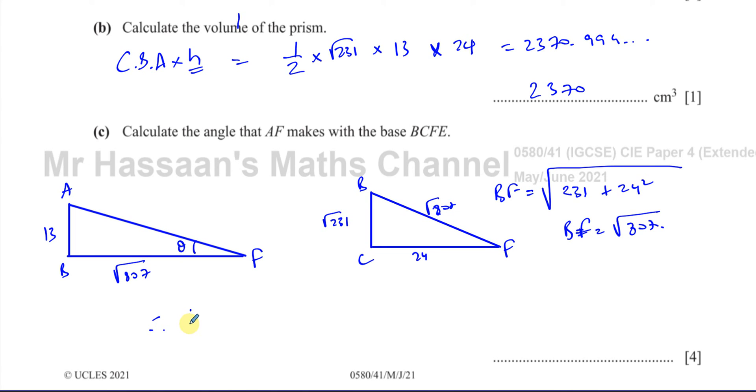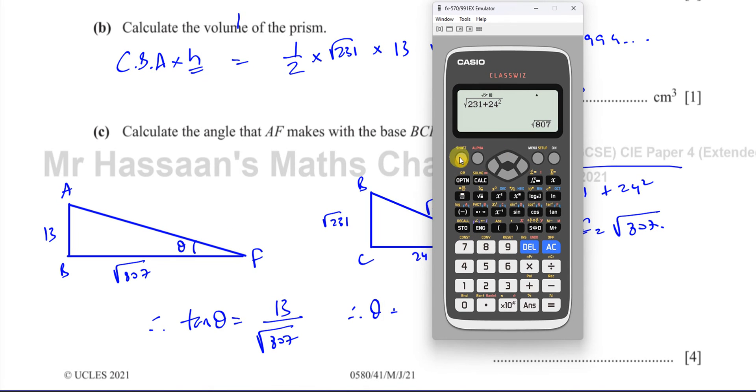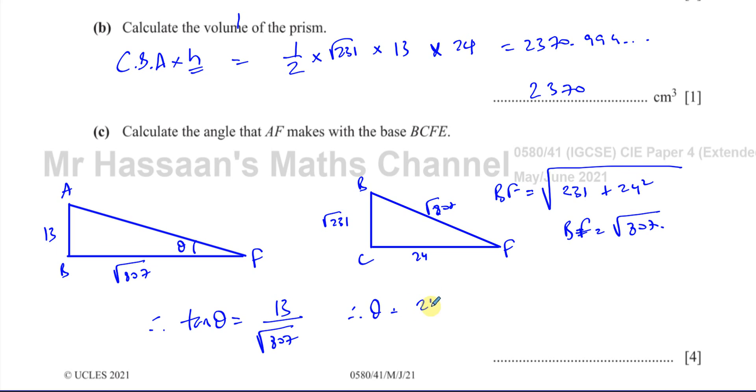So therefore, I can say that the tangent of my angle is equal to the opposite, which is 13, over the adjacent, which is the square root of 807. So therefore, my angle is equal to, so we do inverse tan, of 13, over my last answer, which was root 807. And that gives me my angle as 24.5898, which we round to one decimal place. That's 24.6 degrees.